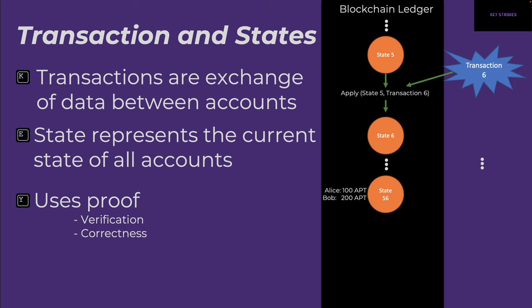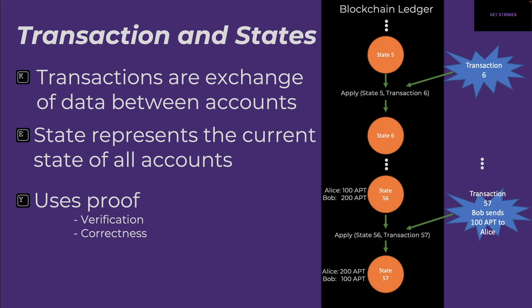For a more concrete example: let's say in state 56, Alice and Bob had 100 APT and 200 APT respectively. Now let's say transaction 57 happens where Bob sends 100 APT to Alice. The previous state 56 and this new transaction 57 are applied together, creating a new state where Alice now has 200 APT and Bob has 100 APT. So every time a transaction happens, it creates a new state based on the previous state and the transaction.